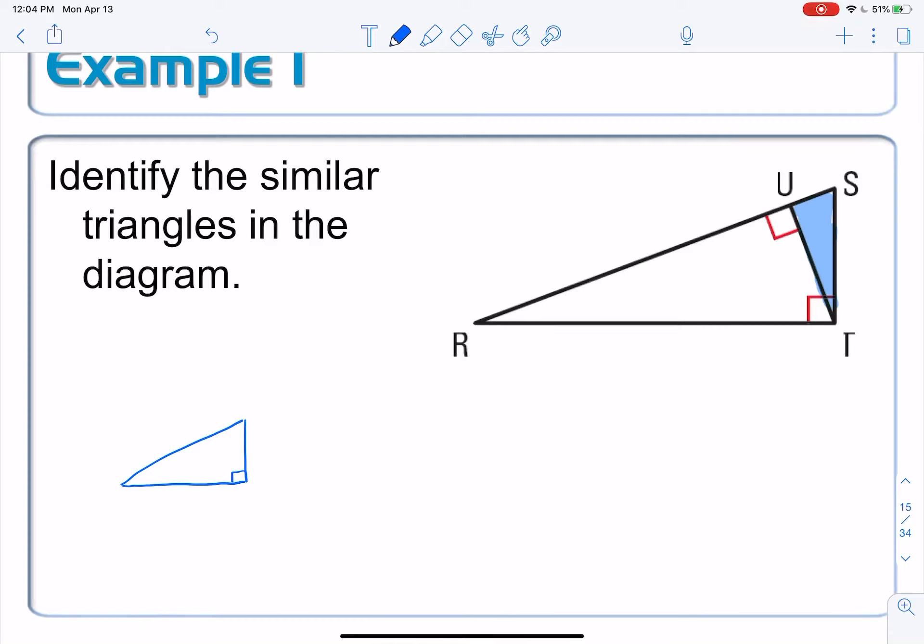So here's our blue one, and the easiest one I find to start with is the right angle. So the right angle for the blue triangle is right here at U, and then you want to draw it exaggerated if you can, so that you can definitely see that you have a shorter leg versus a longer leg.